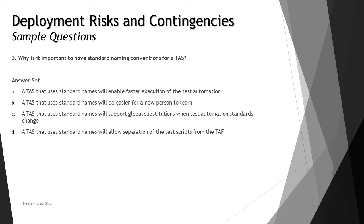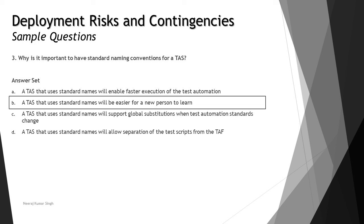Option C says a TAS that uses standard names will support global substitution when test automation standards change. Global substitutions could come from different segments, organizations, or procedures altogether, so this is not exactly limited to naming conventions. Option D says a TAS that uses standard names will allow separation of the test script from the TAF, but naming conventions have nothing to do with the TAF or test script separation. Therefore, the right answer is B: a TAS that uses standard names will be easier for a new person to learn.